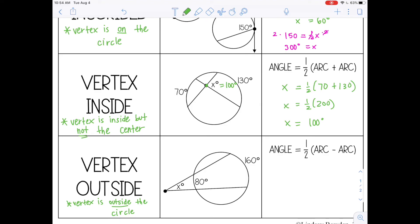And the formula for this is the angle equals half the arc minus the arc, but you may want to make a note. It's the big arc minus the small arc, just so we don't have a negative angle measure.